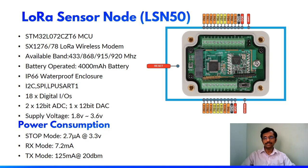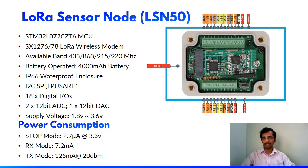It comes with an IP66 waterproof casing, so it can be readily deployed anywhere outside by simply interfacing it with a sensor. It also has several options to integrate sensors, such as I2C, SPI, and UART interfaces, so without any extra modules we can interface sensors directly with the LSN50.